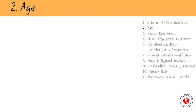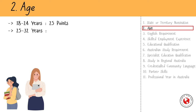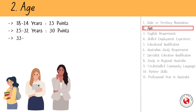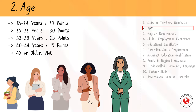Factor 2 is Age. Points are awarded based on your age at the time of invitation. If you are 18 to 24 years old, you get 25 points. If you are 25 to 32 years old at the time of invitation, you get 30 points. If you are 33 to 39 years old, you will receive 25 points. You get only 15 points if you are within the 40 to 44 years age bracket. If you are older than 45, you are not eligible to apply.